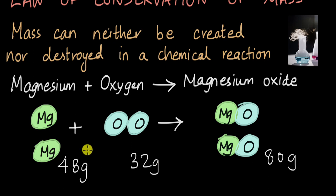Or if we take, let's say, 20 grams of magnesium and 10 grams of oxygen, then we will get 30 grams of magnesium oxide. No mass is created or destroyed in a chemical reaction.